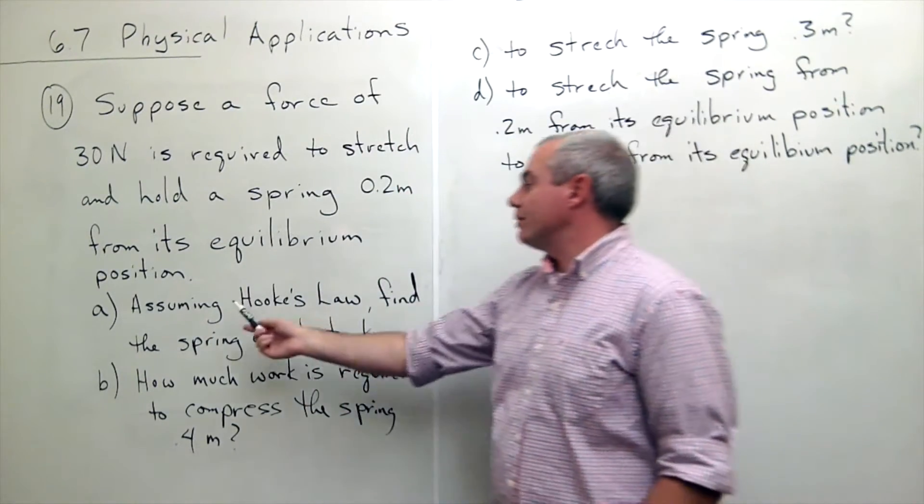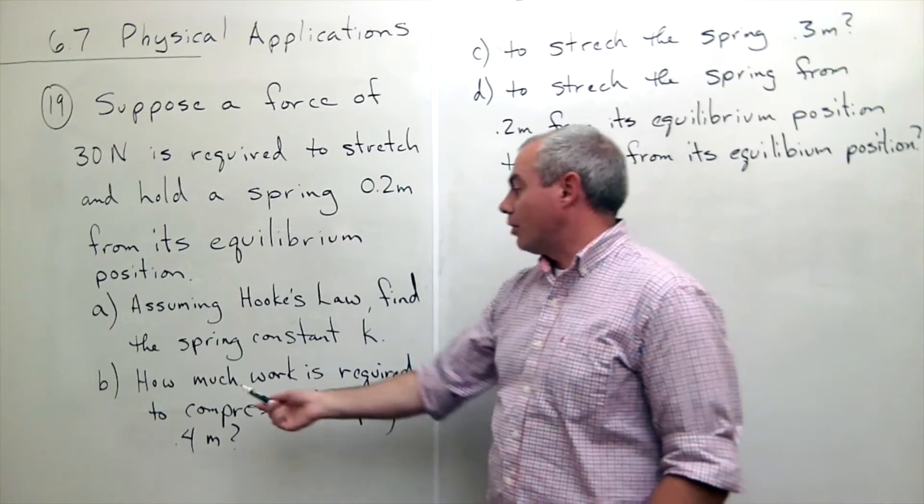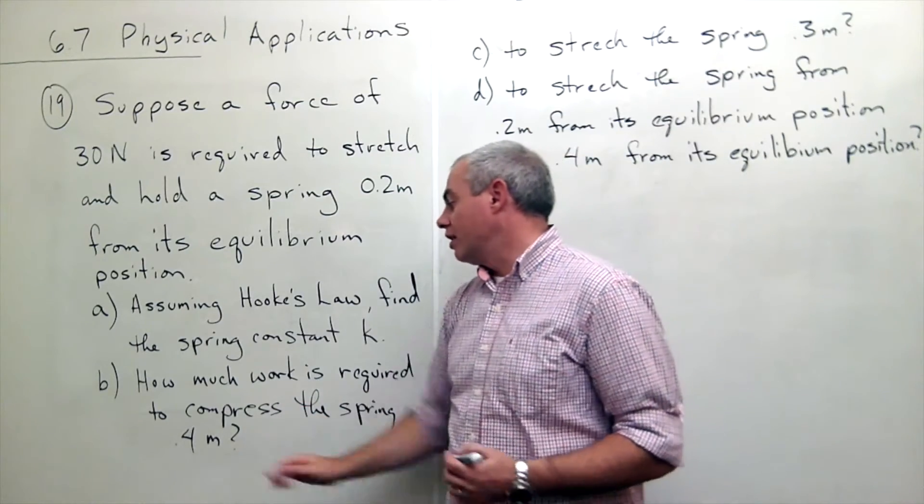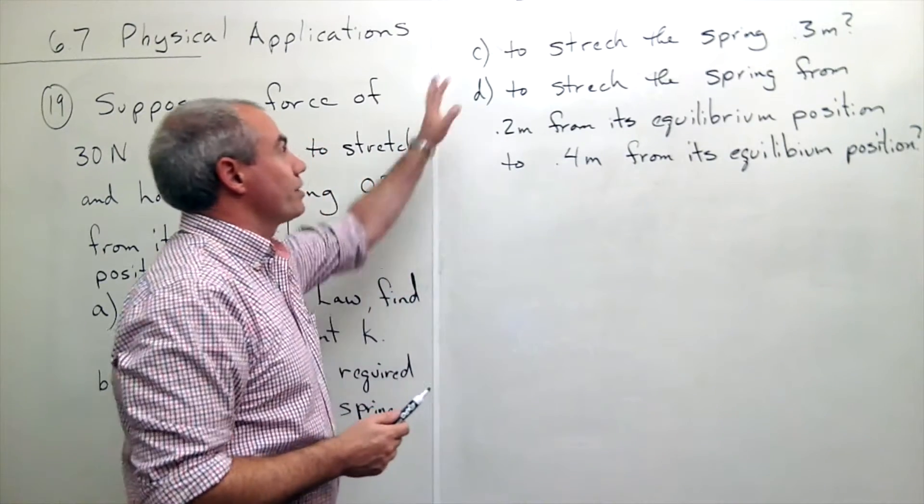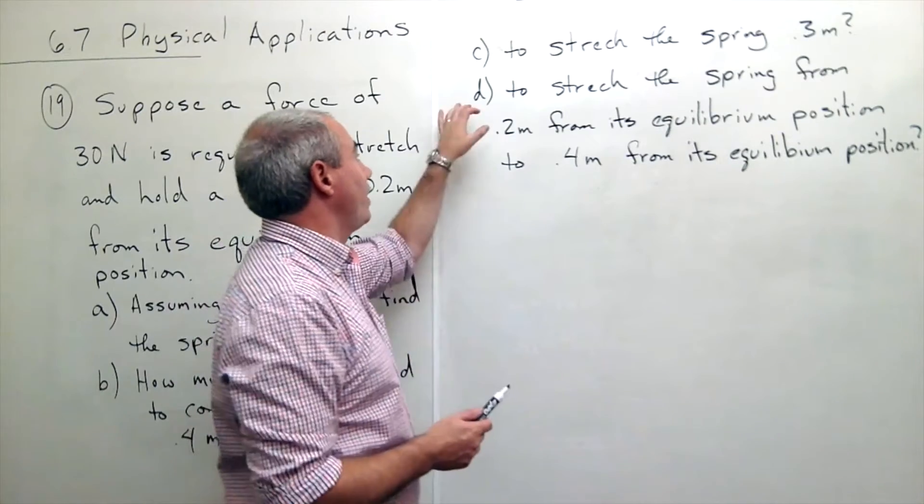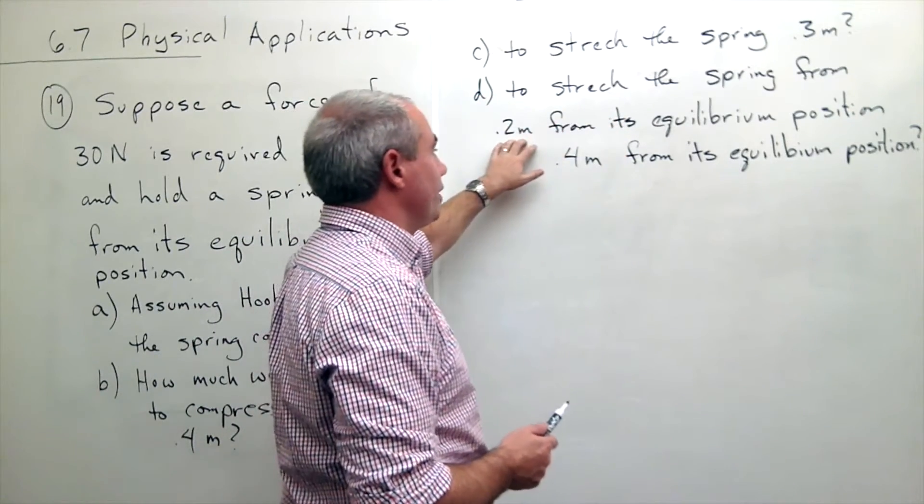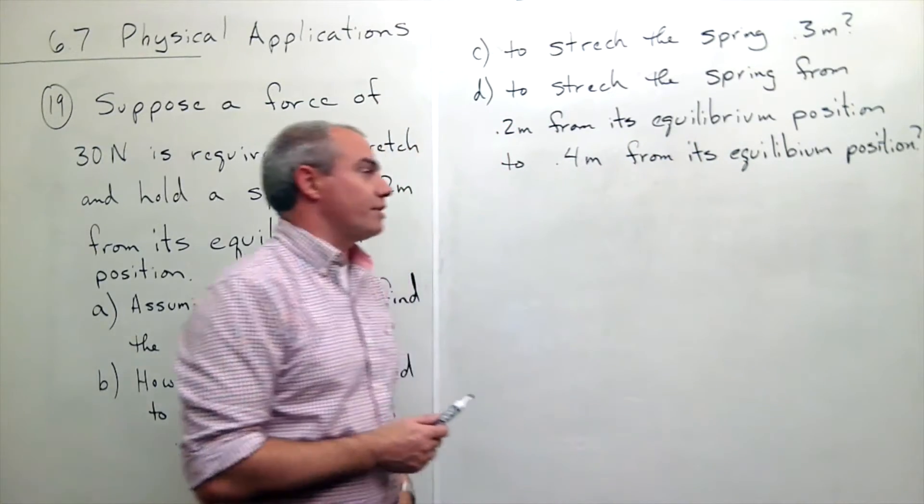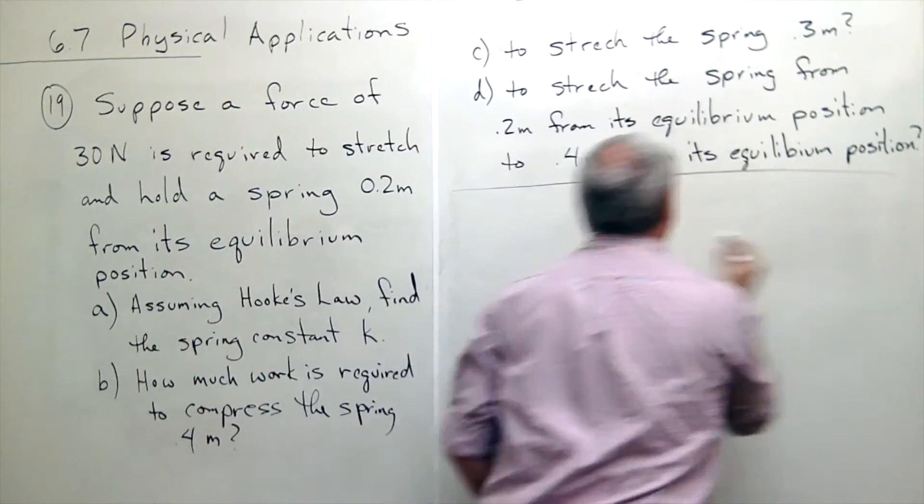Part A says assuming Hooke's law, find the spring constant K. Part B: how much work is required to compress the spring 0.4 meters. Part C: how much work is required to stretch the spring 0.3 meters, and finally part D: how much work is required to stretch the spring from 0.2 meters from its equilibrium position to 0.4 meters from its equilibrium position. So we've got four parts here, let's start with part A.